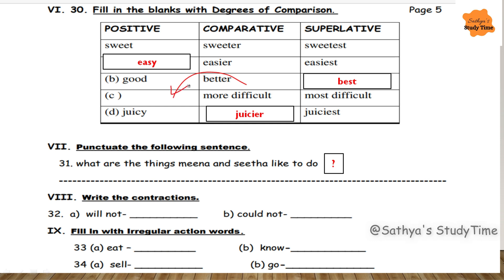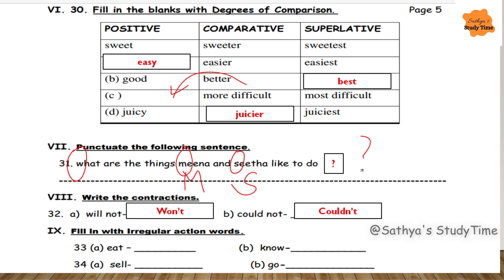Next, punctuate the following sentence: 'What are the things Mina and Sita like to do?' — W is capital letter, Mina capital M, Sita capital S, then question mark. Write the contractions: will not becomes won't, could not becomes couldn't. Fill in with irregular action words: eat/ate, know/knew, sell/sold, go/went.